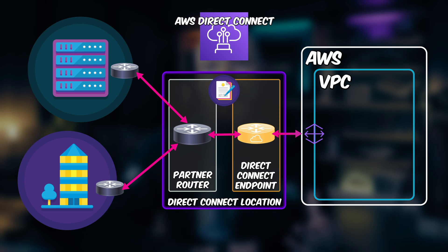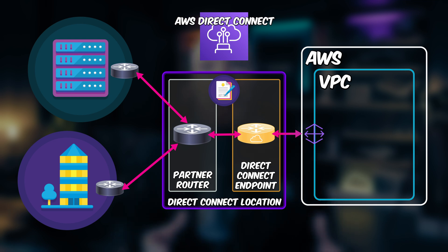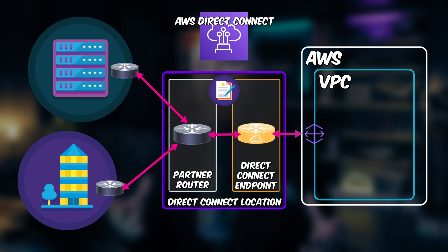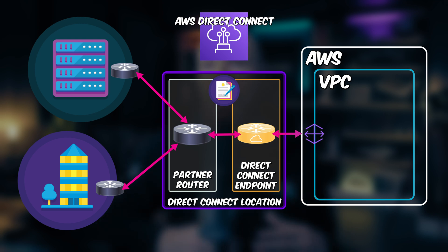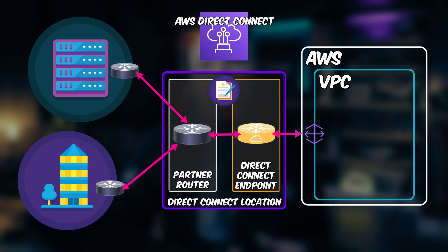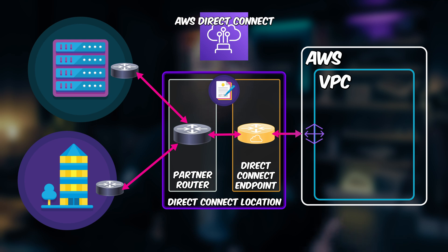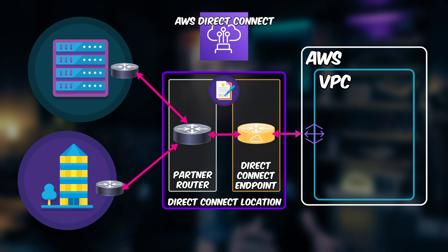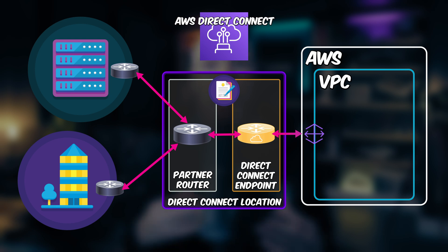Depending on the Direct Connect location and the partners you're working with, you can get Direct Connect connection speeds from 50 megabits per second all the way up to 100 gigabits per second. Along with the benefits of having your own private network link between your office or data center location to AWS, this helps improve speed and latency compared to going over the public internet.